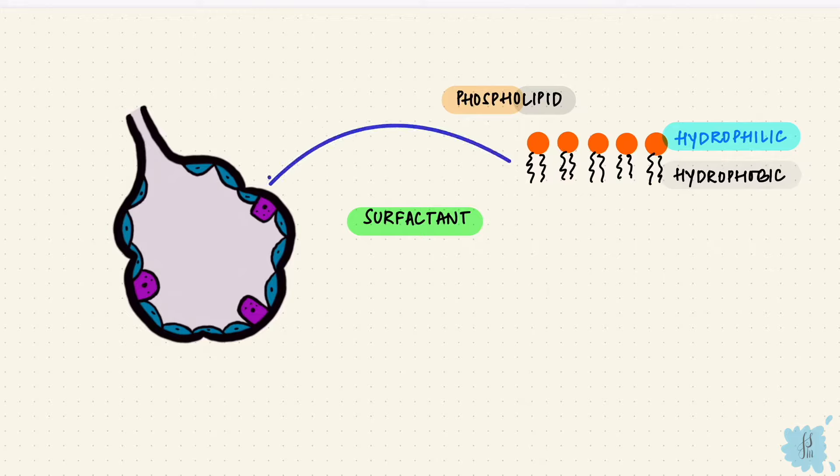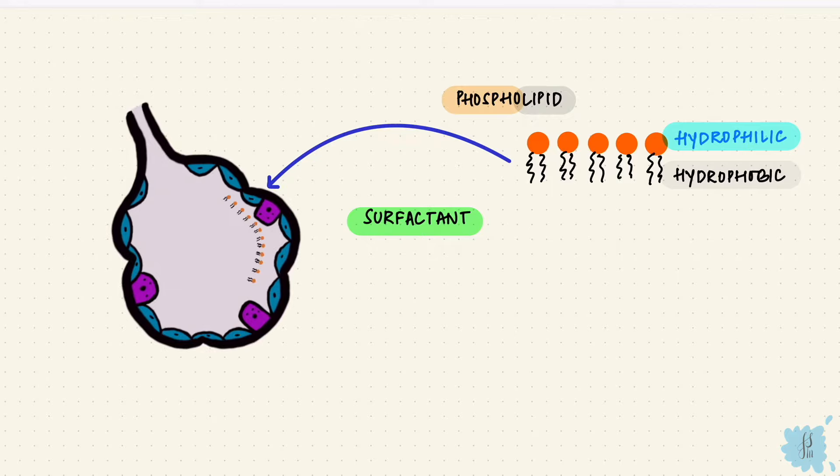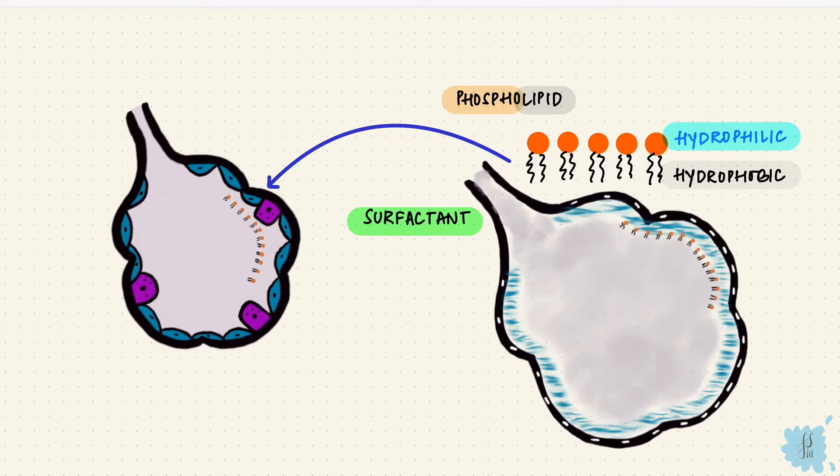They don't like the water, so instead they face the lumen when they line up along the interface. Now this interface is responsible for the surface tension, so by lining up like this, surfactant reduces the surface tension.